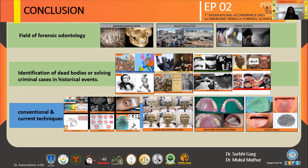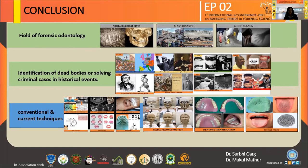Tongue prints are basically at their building stage. Tongue print is just like a fingerprint — every individual has a unique tongue print. We can take an alginate impression, but that is not the most accurate method currently. The reference for this was a review article titled 'The Current Trends in Forensic Odontology' by Nadeem et al.